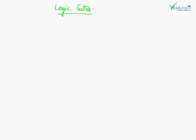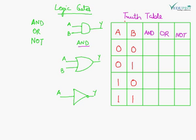There are three basic logic gates: AND gate, OR gate, and NOT gate. These are the three basic gates. AND and OR gates are two-input gates, while NOT is only a one-input gate.